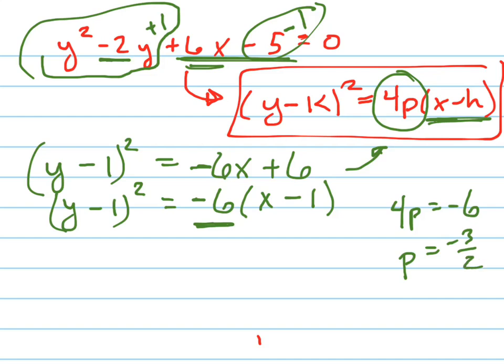So now I have to understand what p represents on my graph. Well, first of all, notice that the y is being squared, which means my parabola is opening up sideways. Next, notice that my p is negative, which means it's opening up to the left, not to the right.